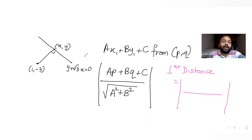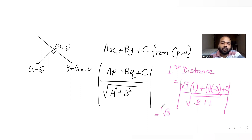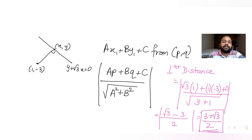So to find the perpendicular distance — which is the minimum distance — I substitute: the coefficient of x is √3, multiplied by 1, plus the coefficient of y which is 1, multiplied by -3, plus 0, all divided by sqrt(√3² + 1²) = sqrt(3 + 1) = sqrt(4) = 2. That gives us (√3 minus 3) upon 2. Since it is inside a modulus and 3 is greater than √3, I write it as (3 minus √3) upon 2.